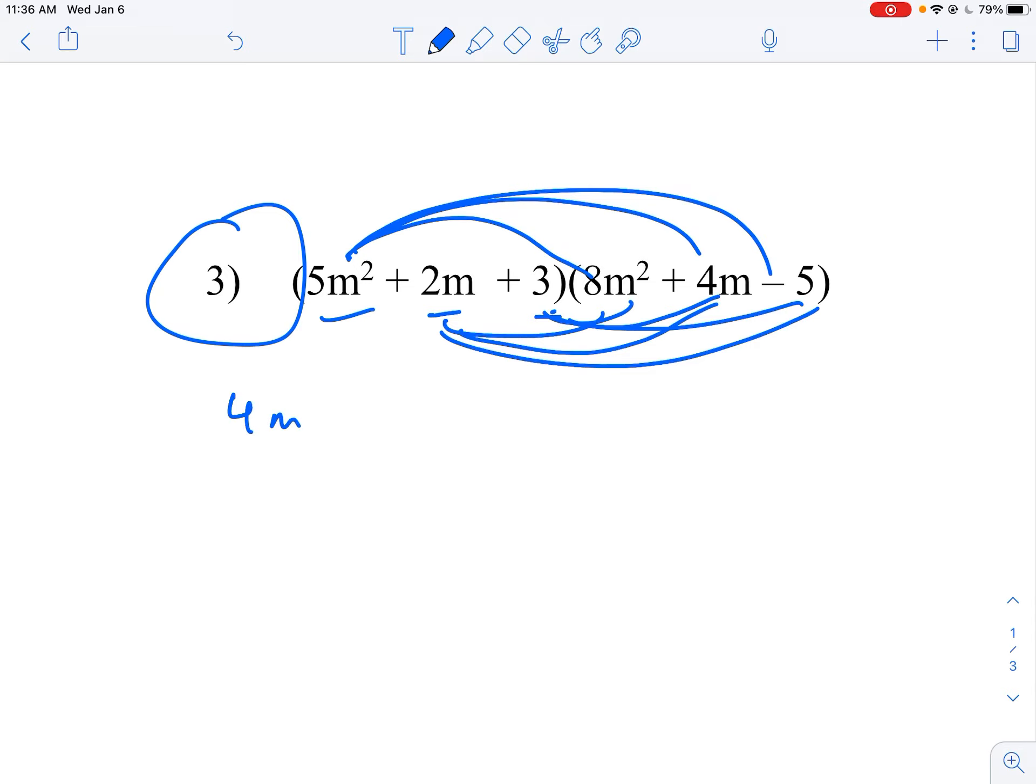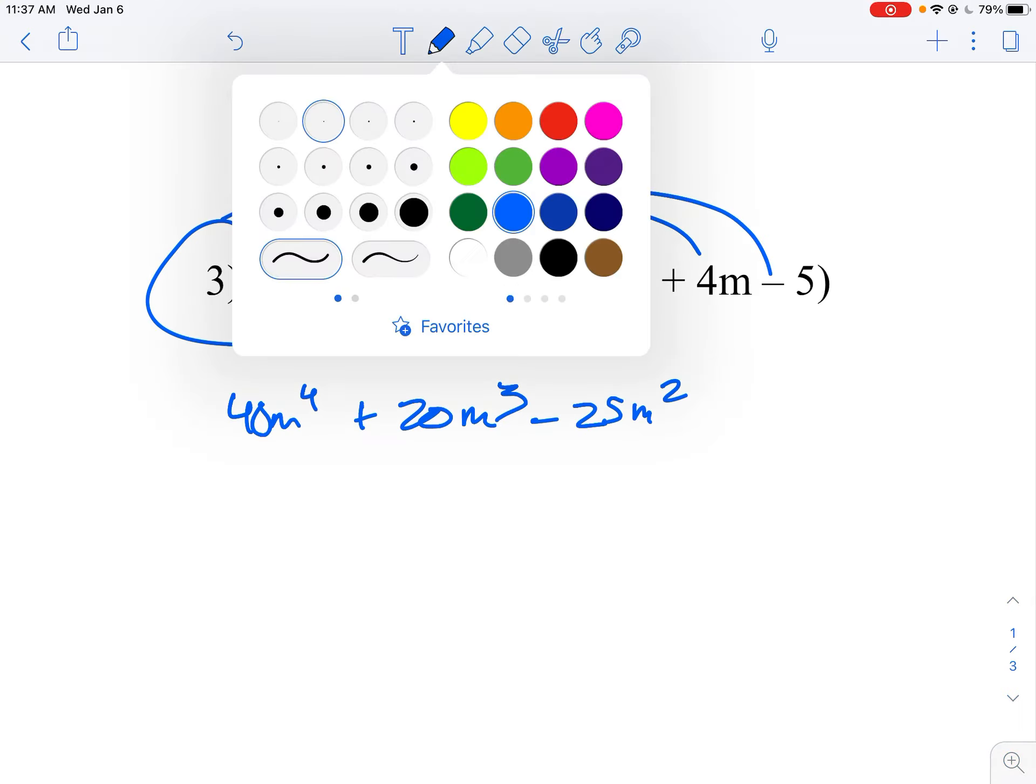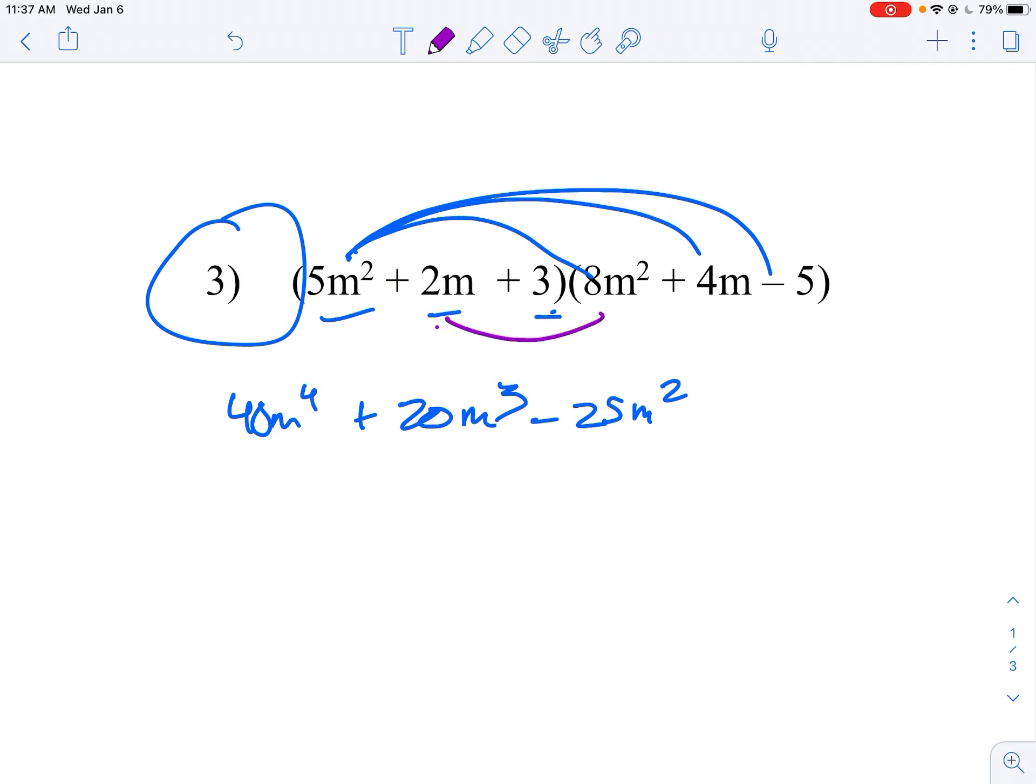You've got 40m to the fourth, and then you've got plus 20m to the third, and then you've got minus 25m². So that's the first set. I'm going to switch colors and do the next one. You've got to do 2m times those three, which is going to give you plus 16m³ and then plus 8m² minus 10m.